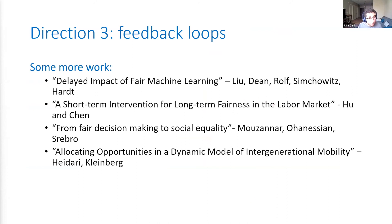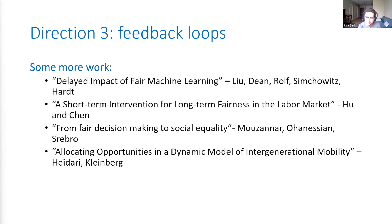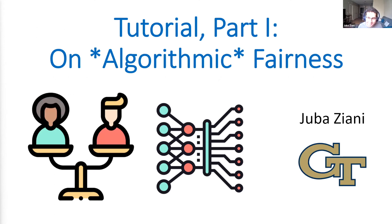A few other recent works looking at feedback loops: 'Delayed Impact of Fair Machine Learning' by Liu, Dean, Rolf, Simchowitz, and Hardt; 'A Short-Term Intervention for Long-Term Fairness in the Labor Market' by Hu and Chen; 'From Prediction-Making to Social Policy' by Mouzannar, Ohannessian, and Srebro; and 'Allocating Opportunities in a Dynamic Model of Intergenerational Mobility' by Haider and Kleinberg. I encourage you to check them out — they're really nice and cool. And I believe it's exactly noon and I'm exactly done.